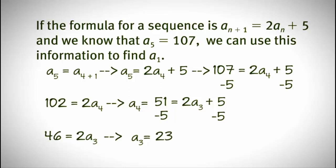So now we're going to plug it back in and do the exact same thing. We have that 23 is equal to 2 times a sub 2 plus 5. When we solve for a sub 2, we get that 2 a sub 2 is equal to 23 minus 5, 18. And we get that a sub 2 is equal to 9.